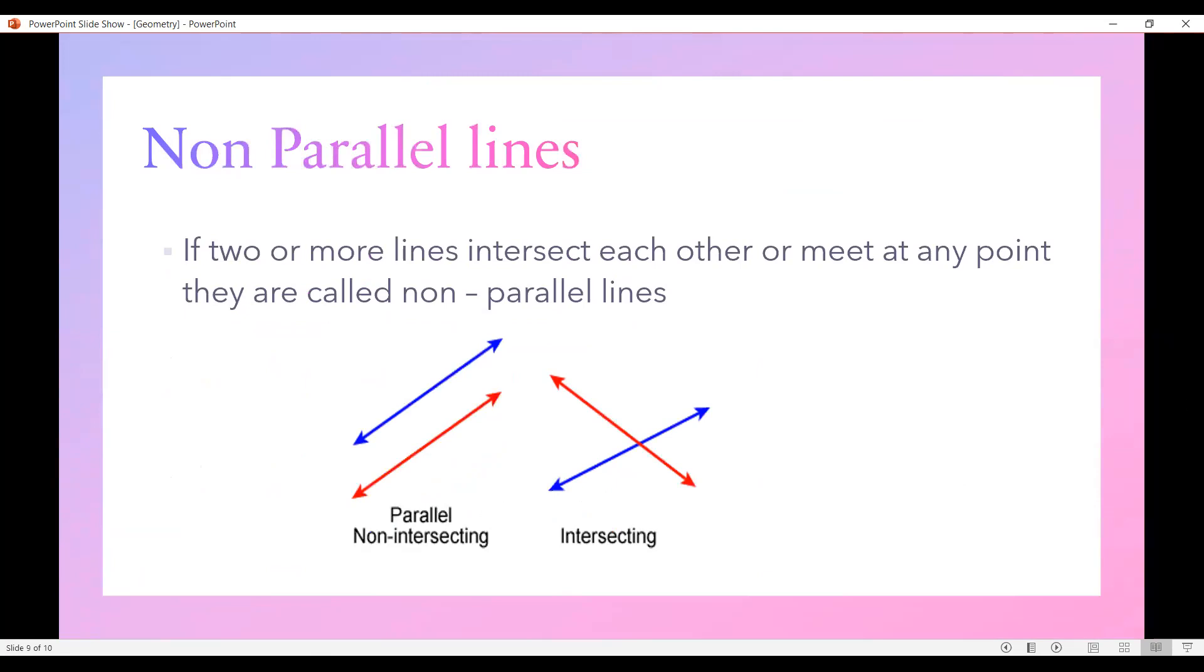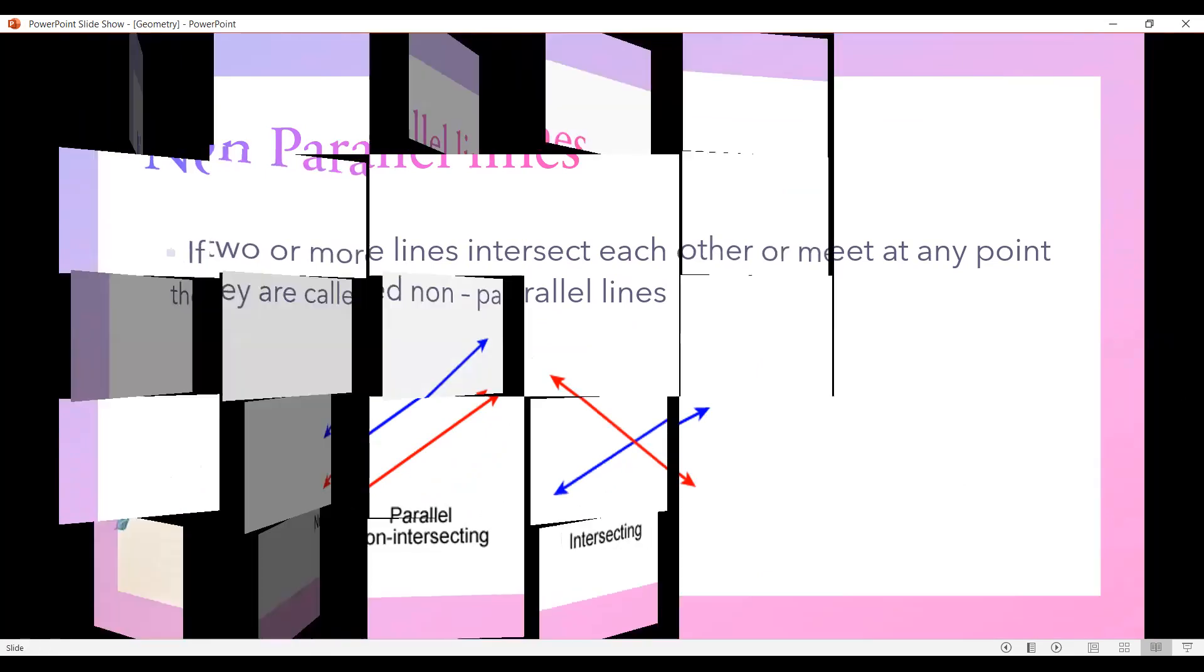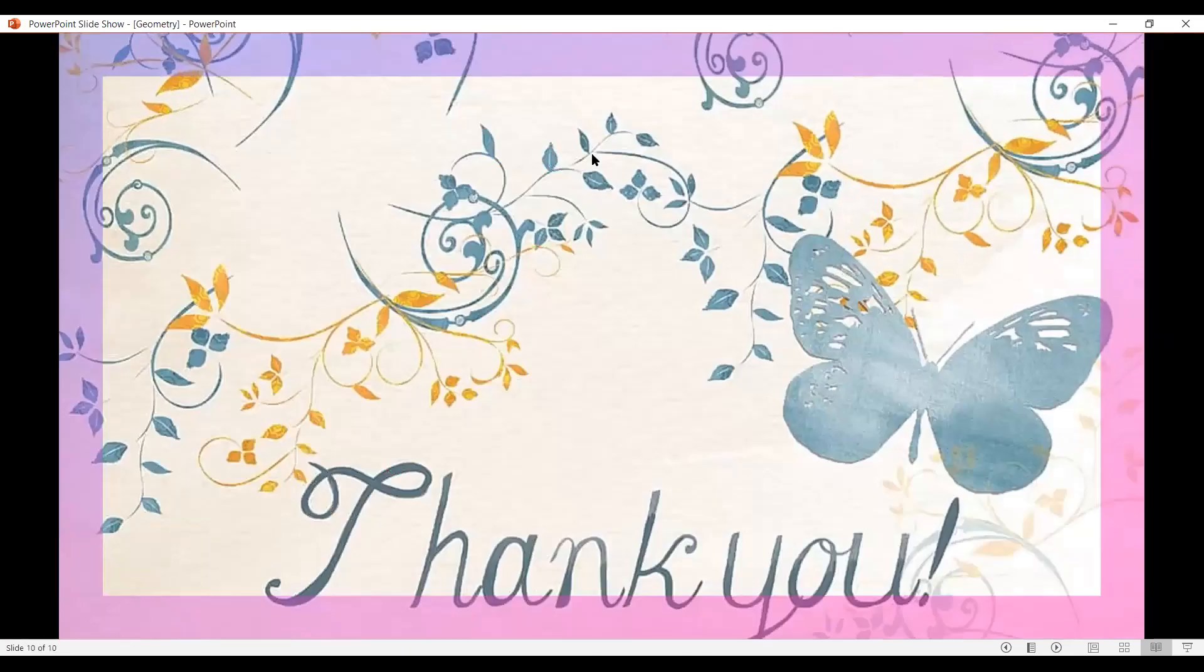Now non-parallel lines. If two or more lines intersect each other or meet each other at any point they are called non-parallel lines. Like this is the parallel line. It doesn't intersect each other and this one is the intersecting one so this is a non-parallel line. Thank you.